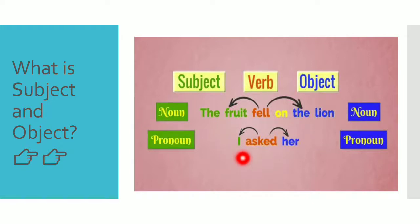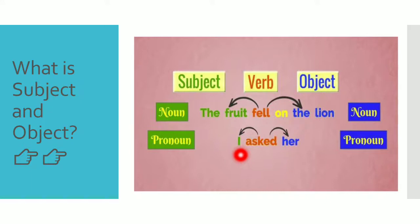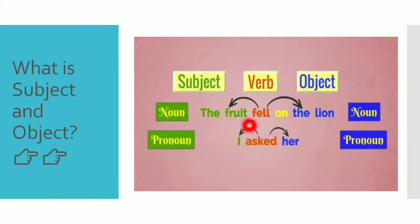For example, 'I asked her' — here 'I' is a pronoun working as the subject, and 'her' is a pronoun working as the object. If a noun or pronoun answers the question 'who' or 'what,' it is the subject. If it answers 'to whom,' it is the object. For example, 'The fruit fell on her' — 'the fruit' is the subject and 'her' is the object.